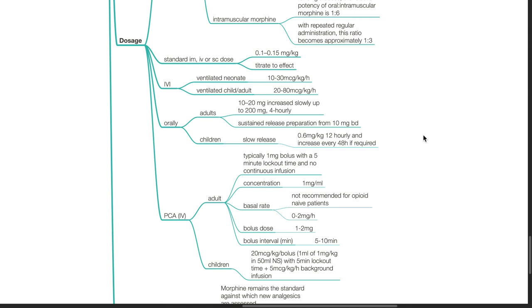For children, slow release formulation, 0.6 mg per kg 12 hourly via oral route and increase every 48 hours if required.